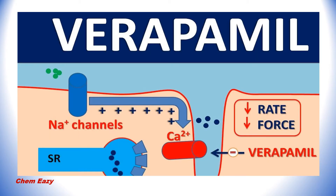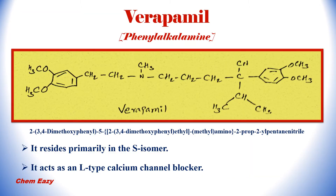First let us see verapamil in detail. Verapamil comes under the class of phenyl alkyl amines. The IUPAC name of verapamil is 2-(3,4-dimethoxyphenyl)-5-[2-(3,4-dimethoxyphenyl)ethyl-methylamino]-2-propylpentanenitrile. This drug resides primarily in the S-isomer, and verapamil acts as an L-type calcium channel blocker. There are L-type, N-type, and T-type channels, and this drug acts on the L-type.